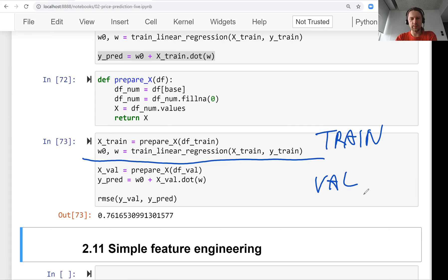Here we prepare the validation dataset in the same way as the training dataset, then we apply the model we learned from the previous step, then we compute the root mean squared error for that model.